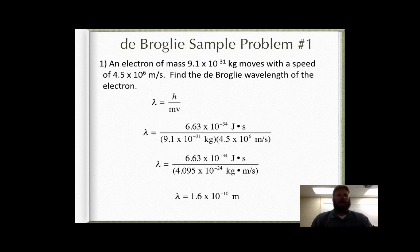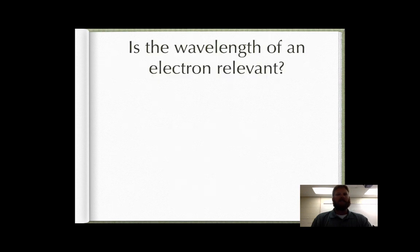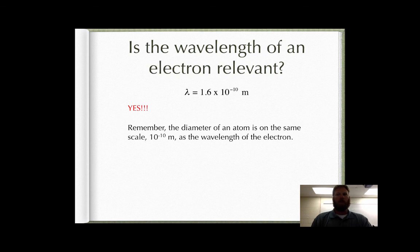Well, so what? Is that even relevant? Think about it. The diameter of an atom is on the scale of 10 to the negative 10th of meters. The wavelength of an electron is comparable to the size of an atom. That makes the wavelength extremely relevant. This means that the wave-like properties of an electron cannot be ignored when developing an accurate atomic model.